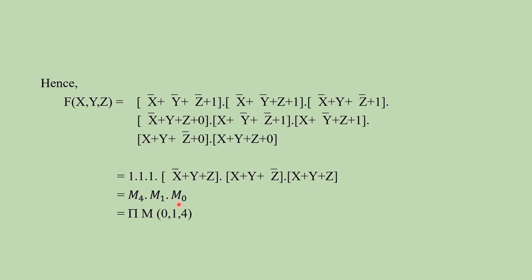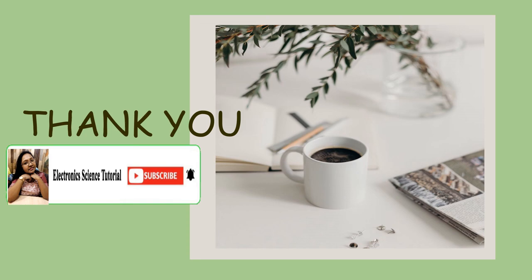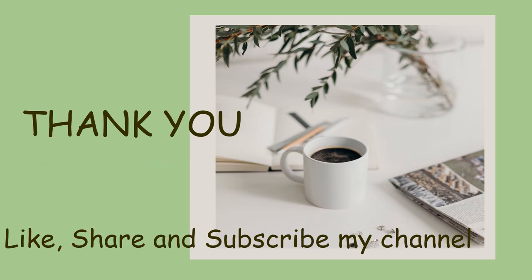So, what we get is the decimal notation of the Canonical POS form: π M(0, 1, 4). In this process we can easily convert the given expression to Canonical POS form. Here we end today's session. Thank you. If you like my video then please like, share and subscribe my channel. We'll see you with a new video. Thank you.